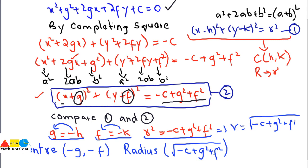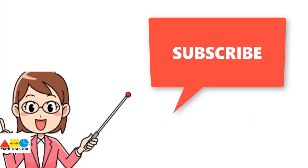So whenever you come across the general form of equation, you can use these formulas to easily find g and f, and then calculate the radius. That's all for today's lecture. In the next lecture we will see how to show that a certain equation represents a circle and how to find its center and radius using the general form. Thank you for watching — if you like this video please subscribe to our channel for more updates.